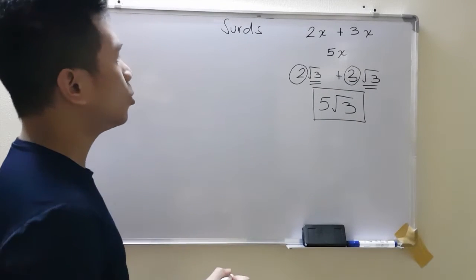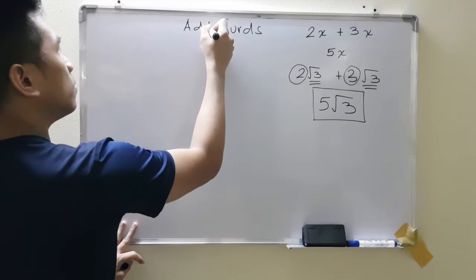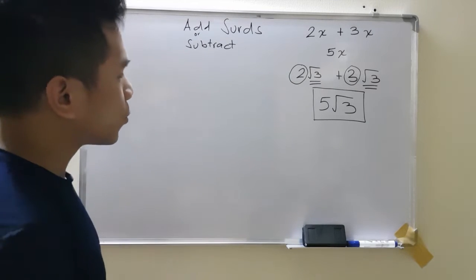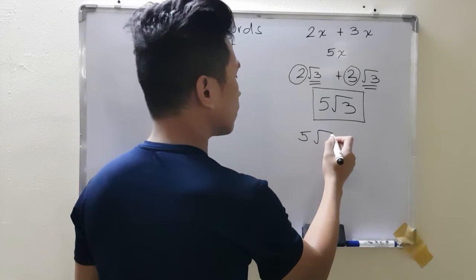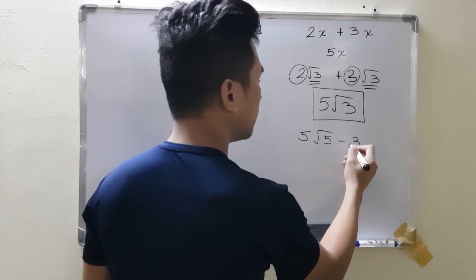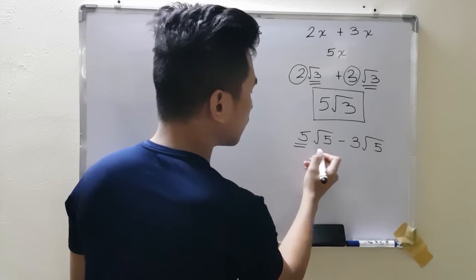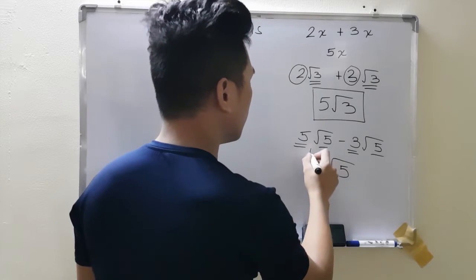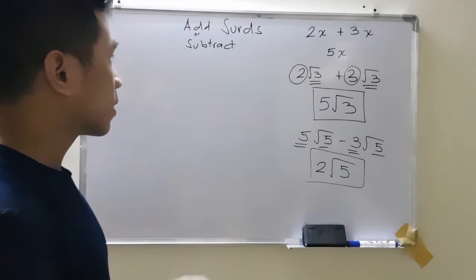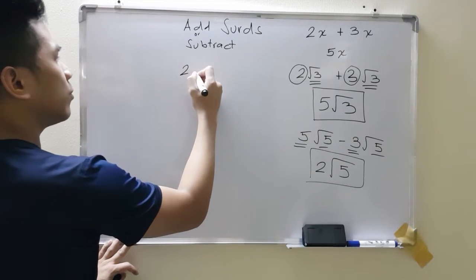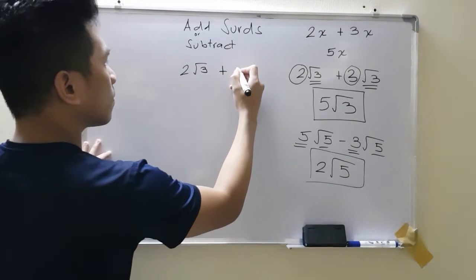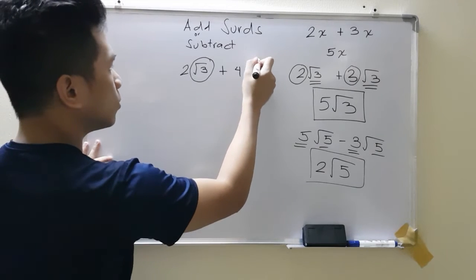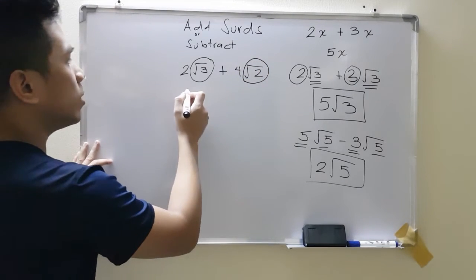That is how you add or subtract surds. In subtraction, it's the same thing. For example, 5 root 5 minus 3 root 5 — you only subtract the numbers in front, giving us 2, and square root of 5 is just copied. That is how we add or subtract surds. If you have 2 root 3 plus 4 root 2 — the surd parts are different (root 3 and root 2), so we can't add them and just leave it as is.